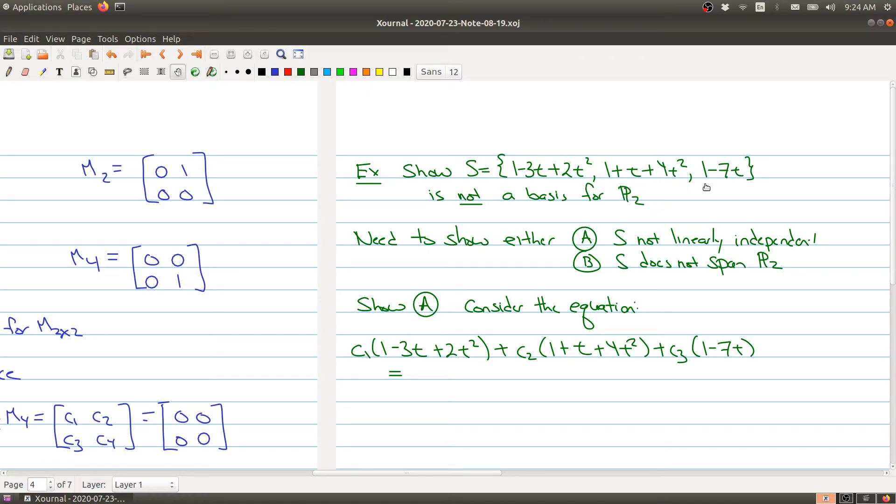So my polynomials are 1 minus 3t plus 2t squared, 1 plus t plus 4t squared, and 1 minus 7t. And I want to show that this is not a basis. So you have two options available to you. You can either show that it's not linearly independent, or you can show that it doesn't span all of P2.